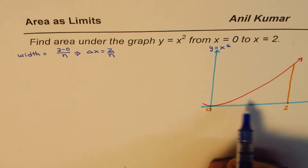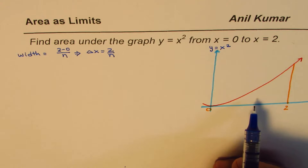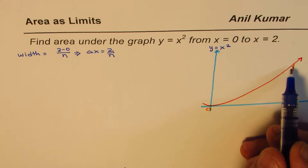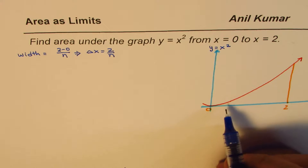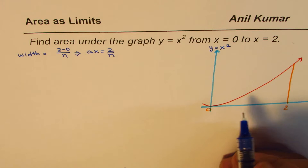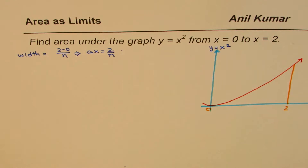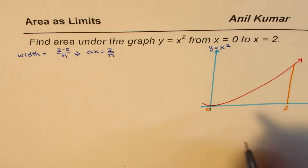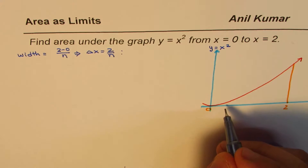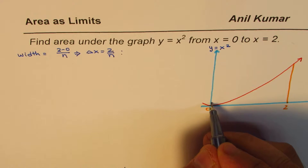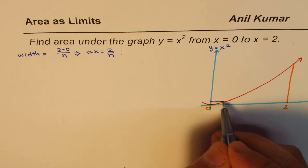That is the whole idea. When we make rectangles, each rectangle is going to be spaced 2/n apart. So delta x = 2/n. Let us say this is our first rectangle.